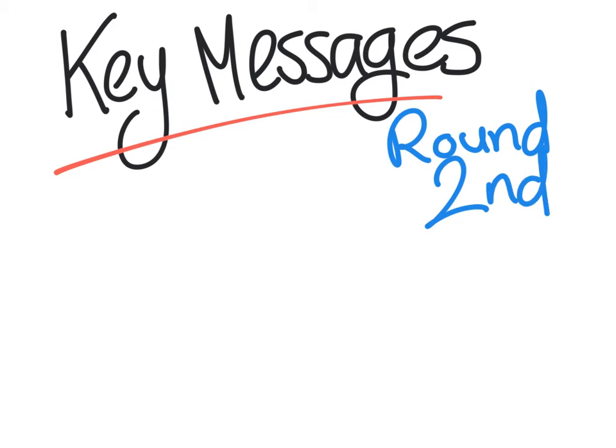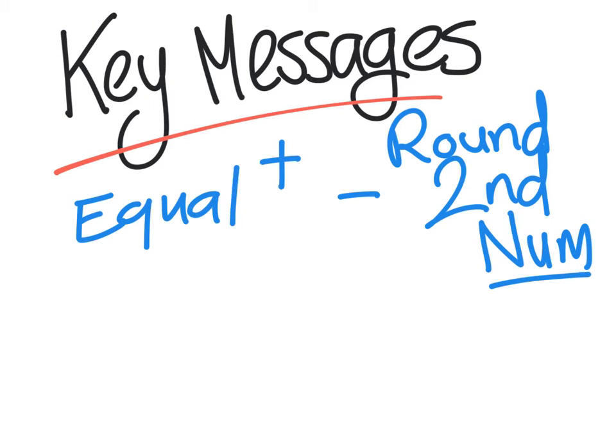So key messages. We always want to round. We want to round the second number. This is really critical. Round the second number, not the first number. And you can either add, or you can minus to make it a tidy number. Now these are our key messages for equal adjustments. The other one is that it's equal. So we do the same to both sides. In compensation, if I plus one to one side, I have to minus one from the other side. In equal adjustments, I do the same to both sides. It's equal.